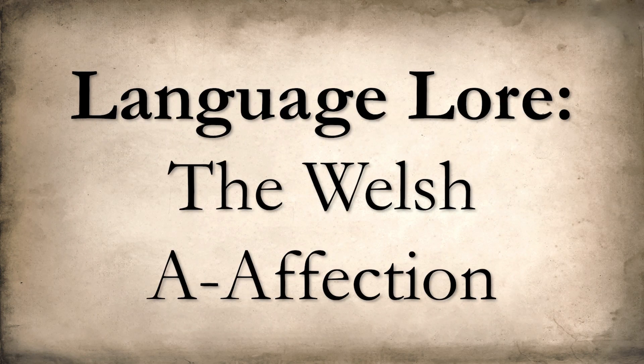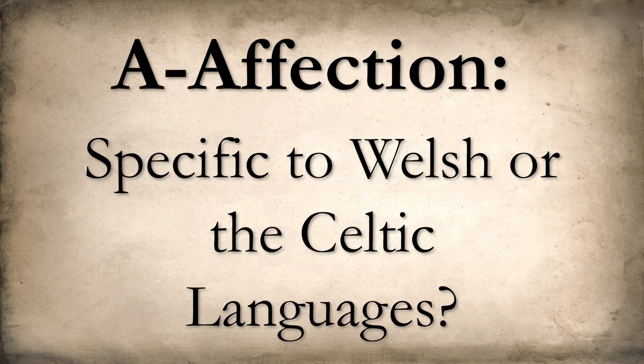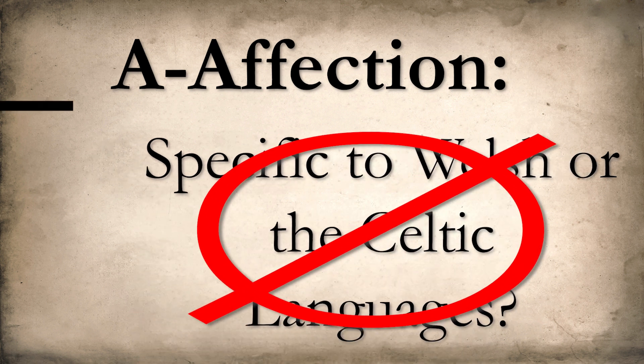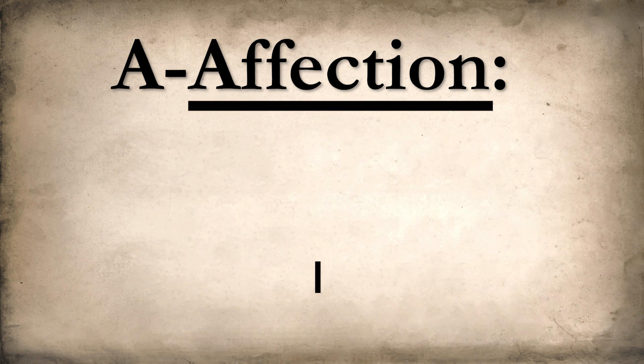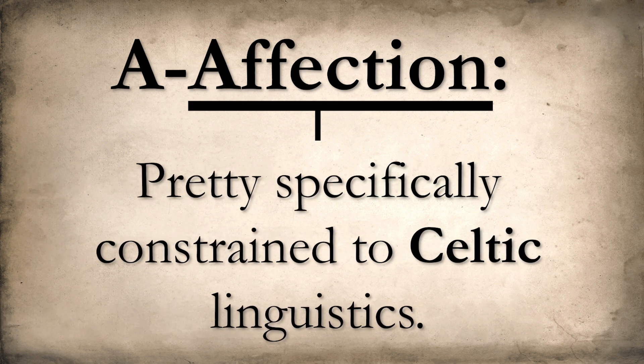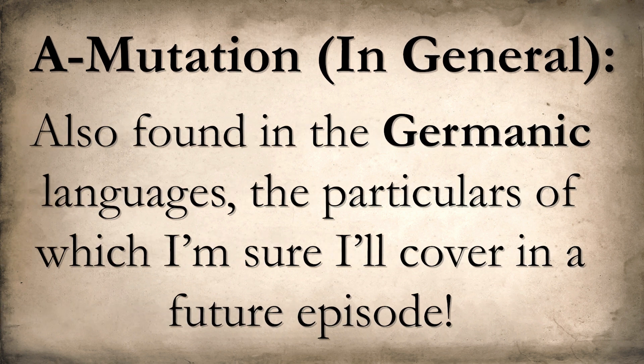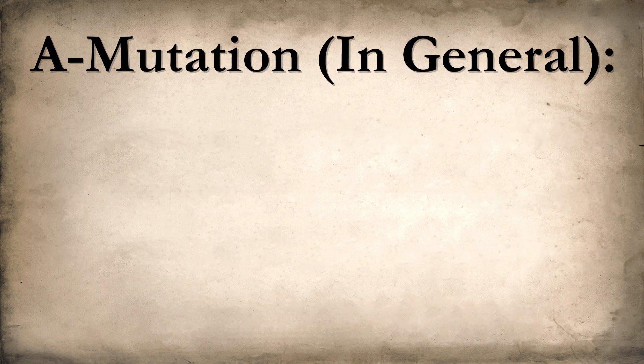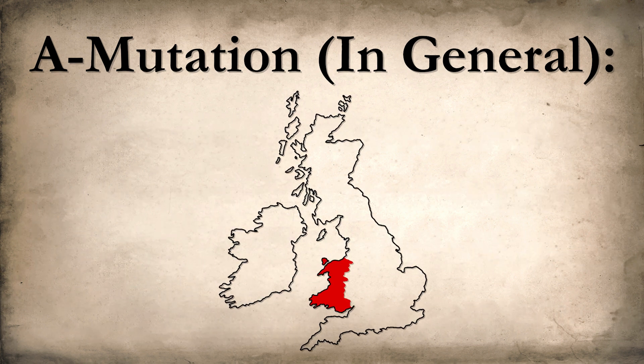Alright, so what is A-affection? Well, it's certainly not specific in nature to Welsh, or even the Celtic languages in general. However, the name 'affection' for referring to vowel mutation is pretty specifically constrained to Celtic linguistics, as far as I'm aware. The A-mutating phenomenon in general can also be found in the Germanic languages, the particulars of which I'm sure I'll cover in a future episode. Today, we're focusing on the Welsh realization.